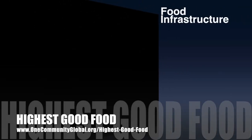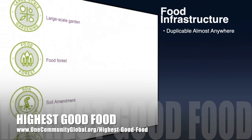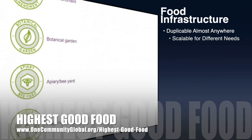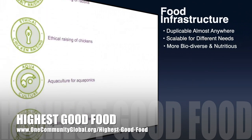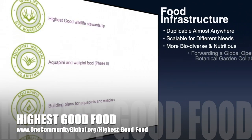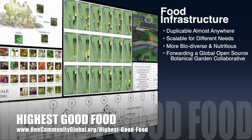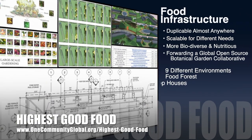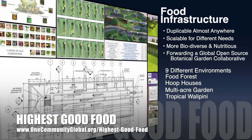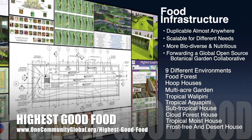One Community's approach to Highest Good Food is duplicable almost anywhere, scalable for different needs, more biodiverse and nutritious, part of forwarding a global open source botanical garden collaborative, and includes nine different free shared and duplicable growing environments.